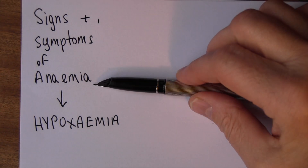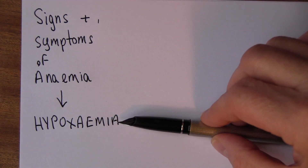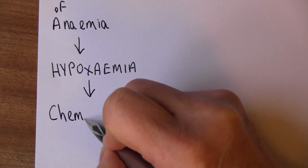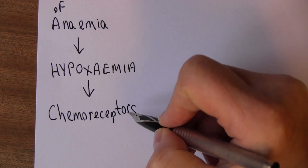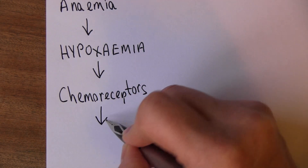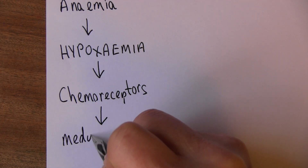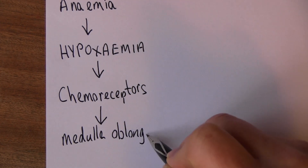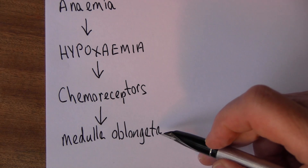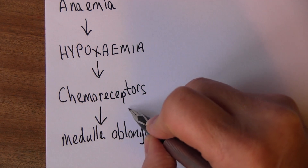Carrying on our thinking about the signs and symptoms we can see in anemia, anemia causes hypoxemia — a reduced amount of oxygen in the blood. Anemia really is a reduced oxygen-carrying capacity of the blood. When oxygen levels drop, that's going to be detected by chemoreceptors, located in the large arteries: the aorta and the carotid bodies just off the carotid artery.